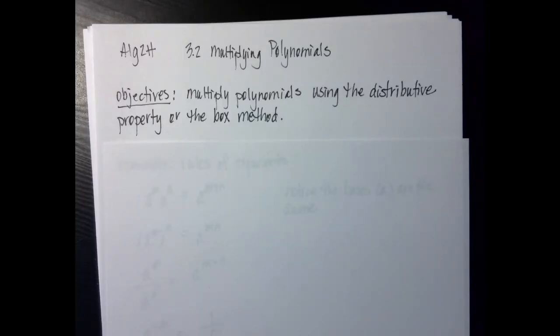Hello, math humans. We're going to do 3.2 today. We're going to be multiplying polynomials. Our objectives are we're going to multiply polynomials using the distributive property or the box method.